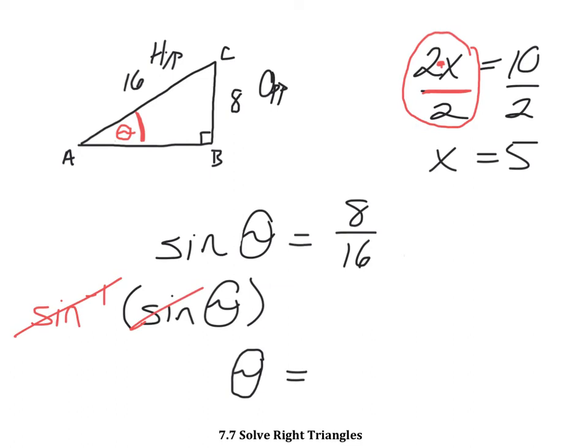But, as you know, in algebra, what you do to one side, you have to do to the other side. So what I'm going to have to do is take the sine inverse of 8 over 16. Or if you want to, you could reduce it down to 1 over 2. Which gives me 30 degrees.